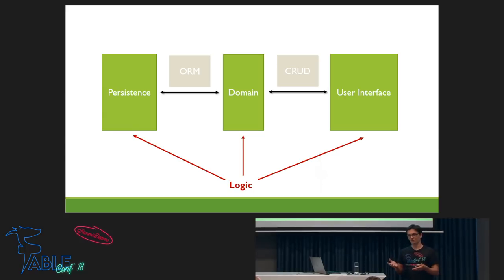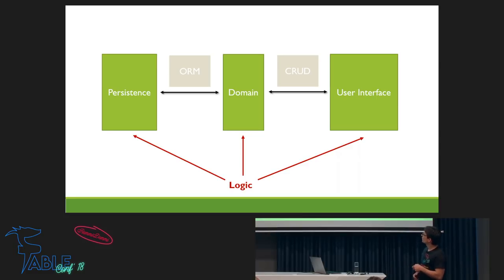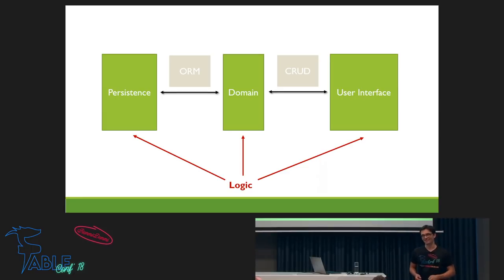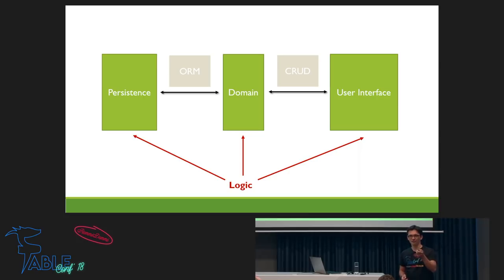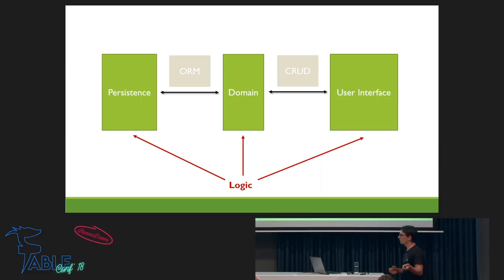A lot of user interfaces have logic that is duplicated from the domain — or hopefully duplicated. I know a lot of user interfaces where it should be duplicated but it's different, and then you get a lot of problems. There's also another part of the application where logic resides, which is the head of the user. This is mostly the hardest to refactor out, because the user knows: I can only click this submit button if I didn't check this radio, or it would crash my whole app.